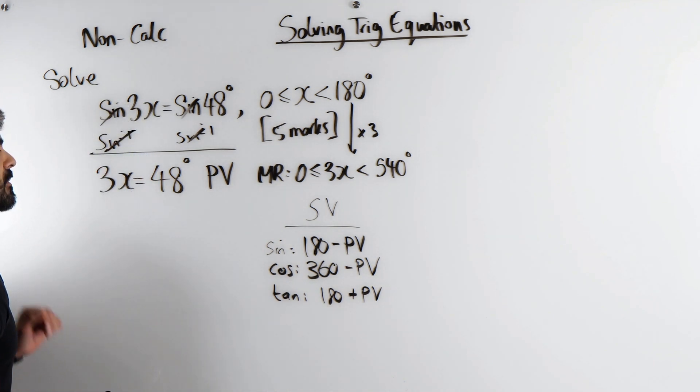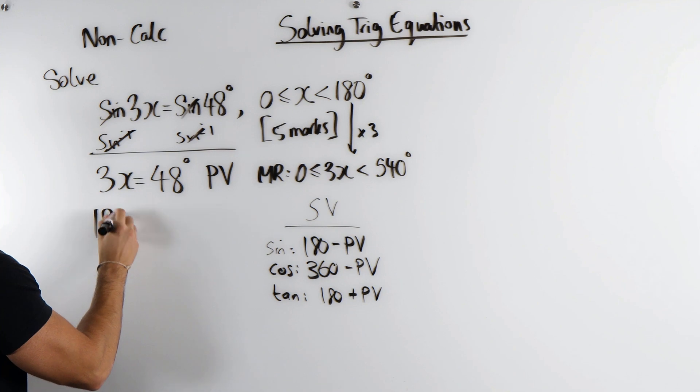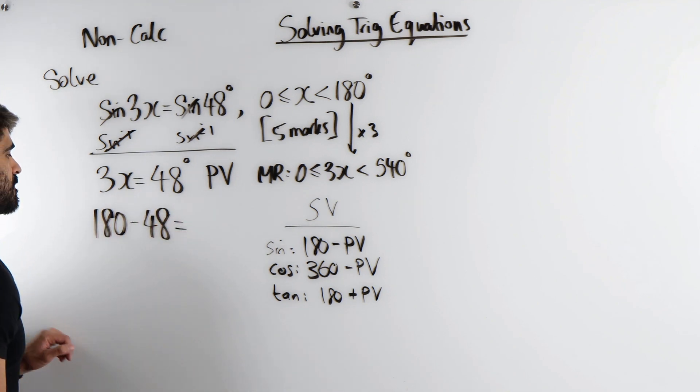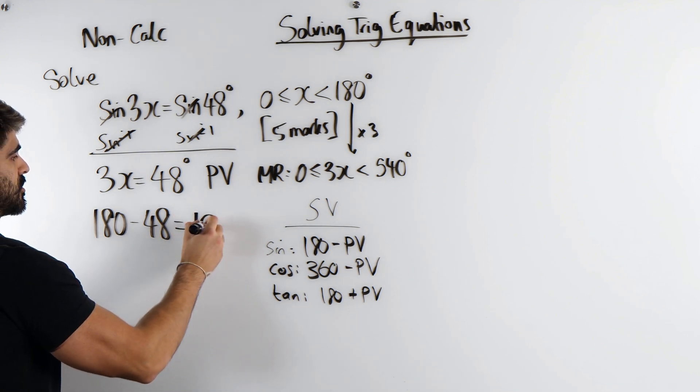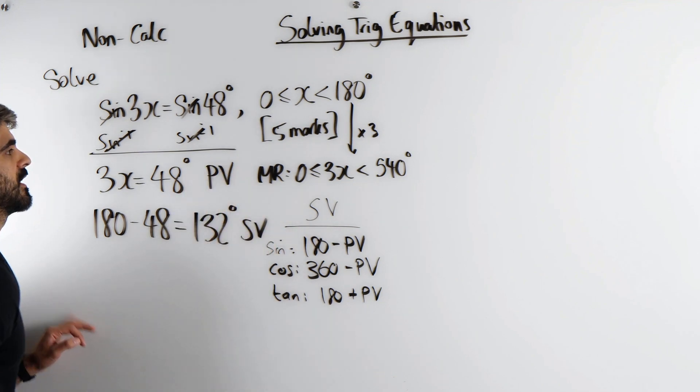So that's my primary value. I'm going to do 180 take away my primary to get my secondary. 180 minus 40 is 140, minus 8, 132. That's my secondary value.